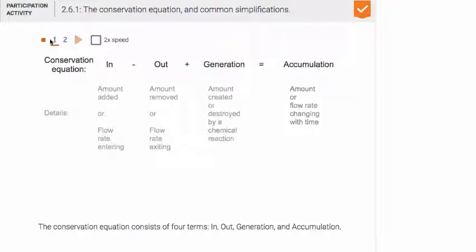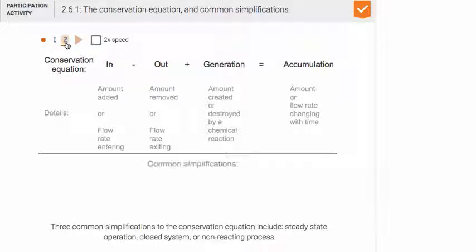And so in this scenario, there are three common simplifications that one makes, and they are to account for the special cases. So one of those cases is a steady state, and in steady state, it could be a steady state operation. You don't accumulate anything, so what's in minus what's out plus what's generated is zero.